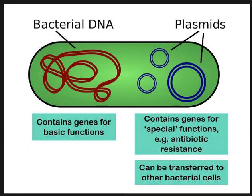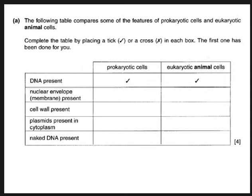Now I want to compare prokaryotic and eukaryotic cells. Here is a simple exam question - a table comparing some features of prokaryotic cells and eukaryotic cells, so bacteria and animals. Complete the table by putting a tick or a cross in each box; the first one has been done for you. Remember, do what the examiner wants - if they ask for a tick or a cross, put a tick or a cross. Pause the video and have a go.